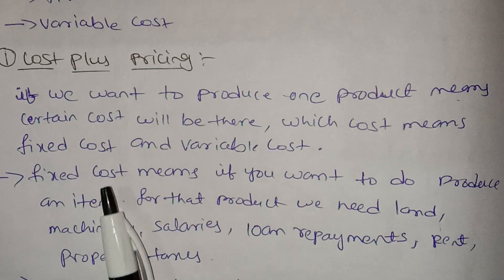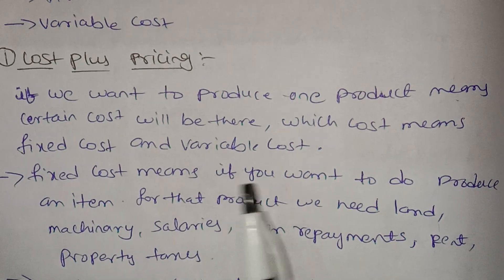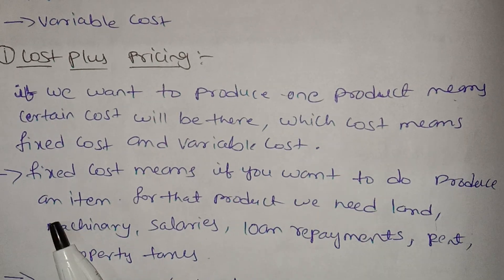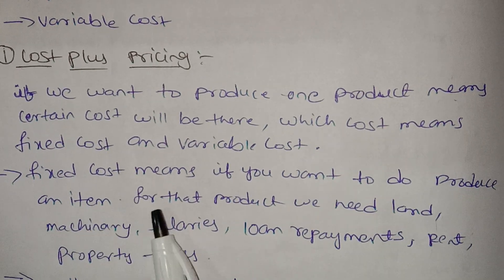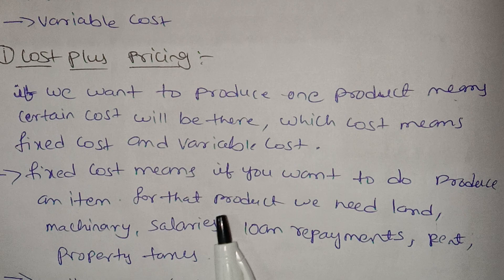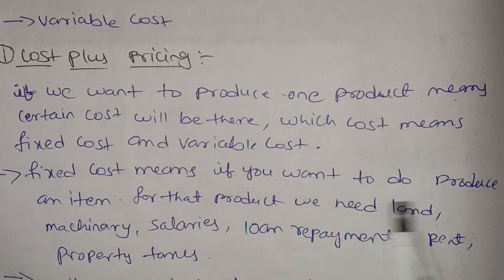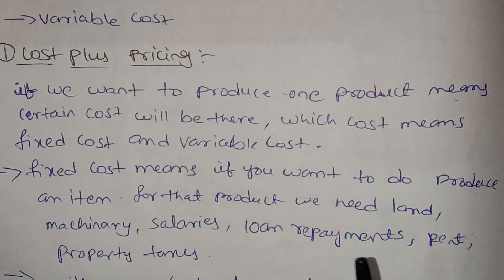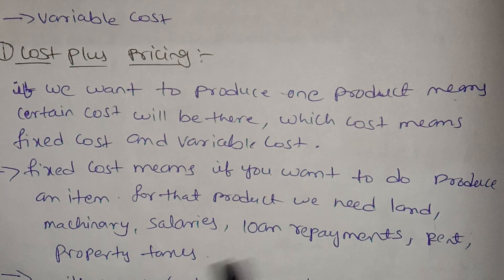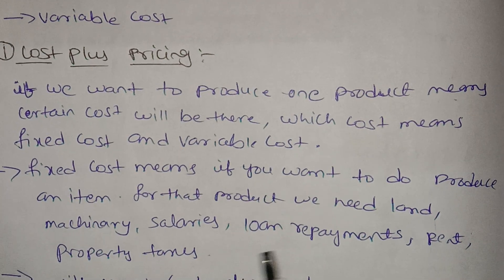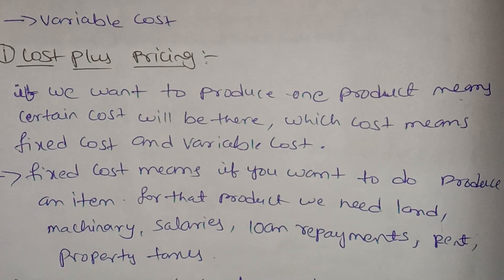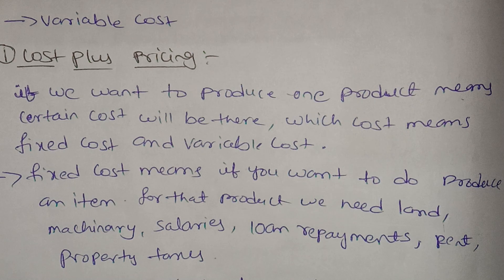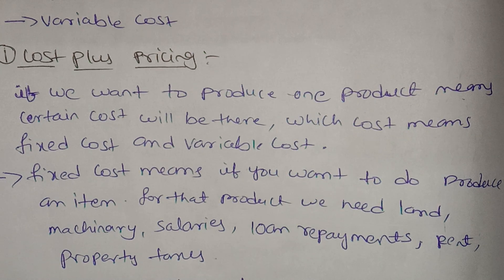Fixed cost means the costs that remain the same regardless of production. For example, to produce an item such as chocolates, we need land, machinery, salary, loan payment, rent payment, and property taxes — these are all fixed costs.